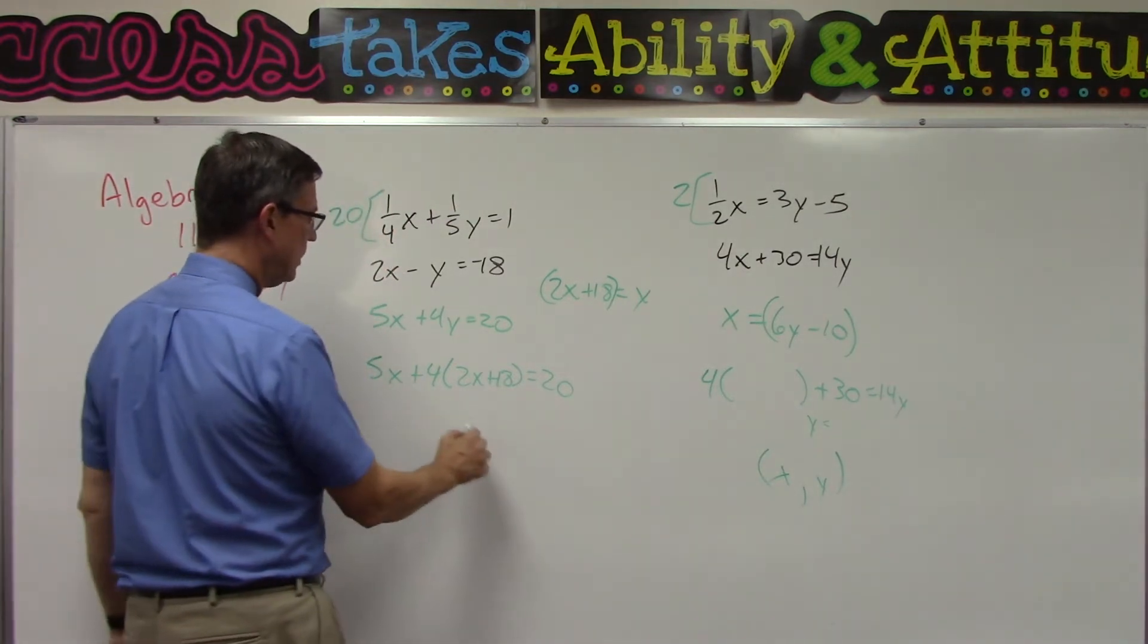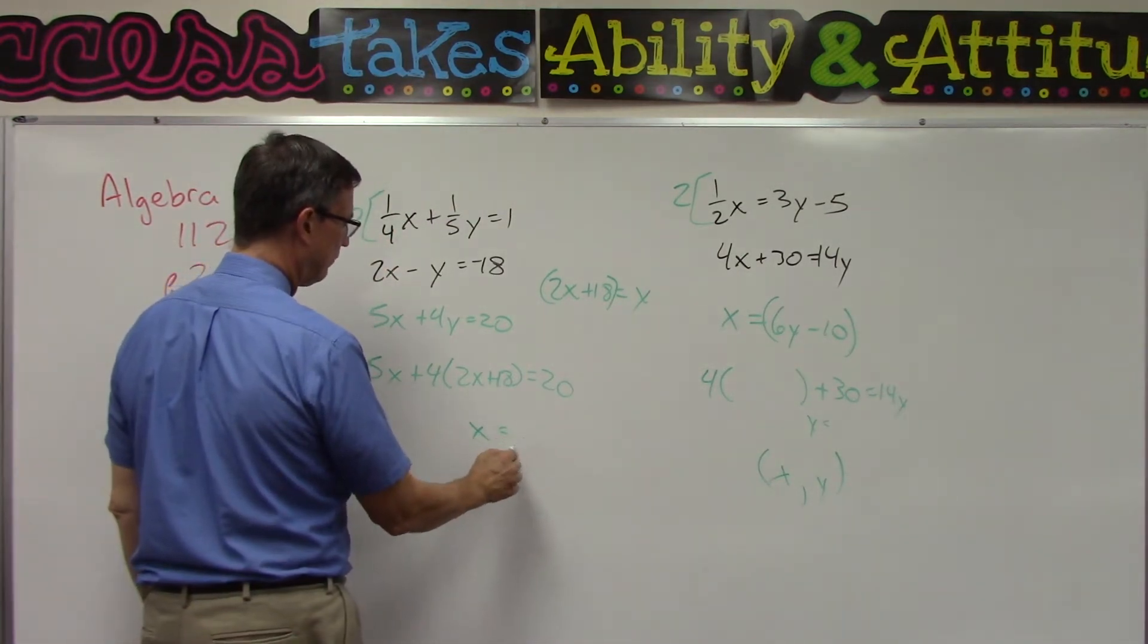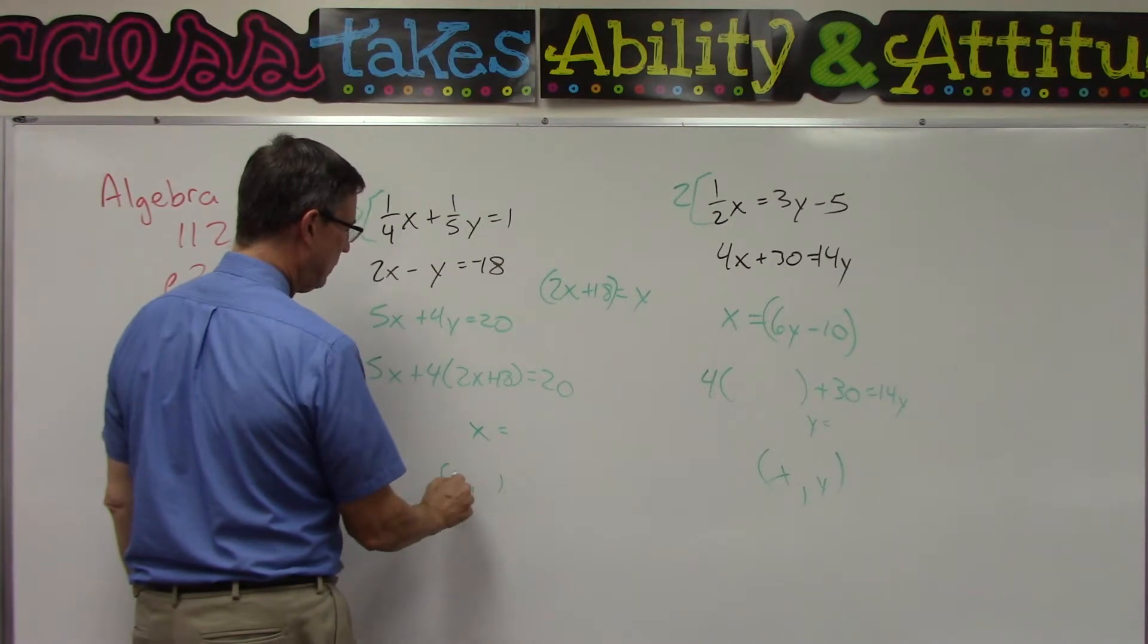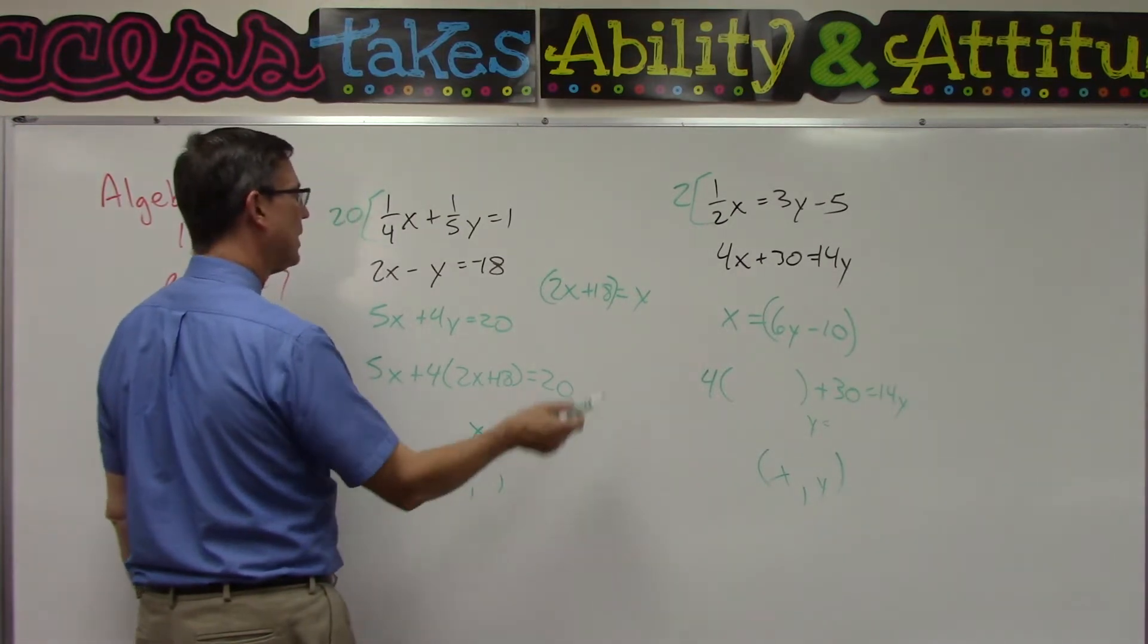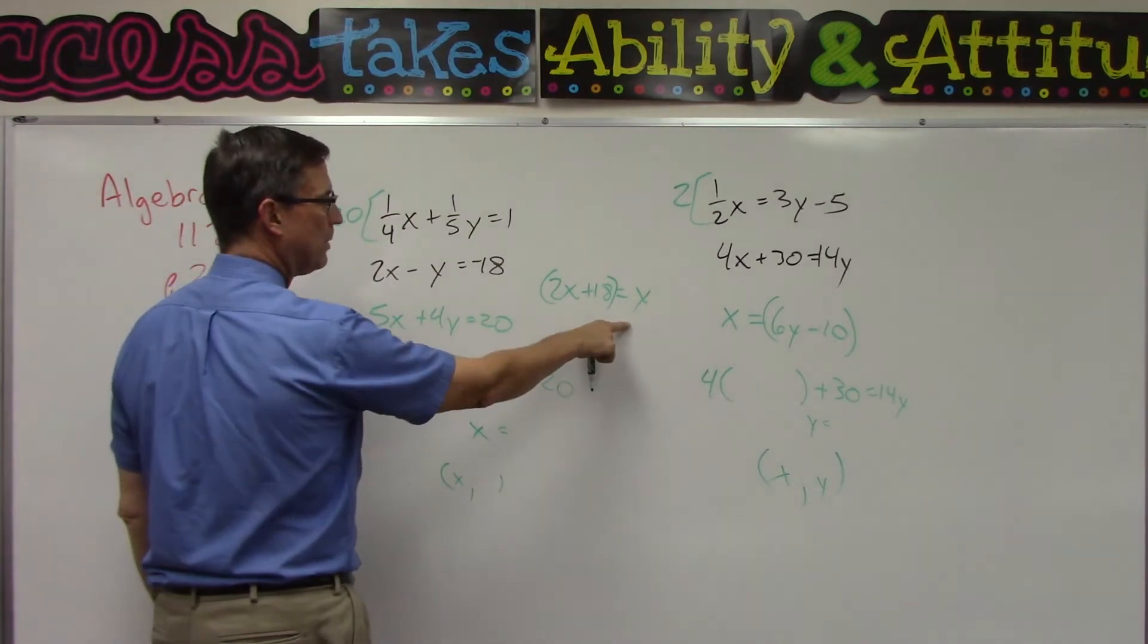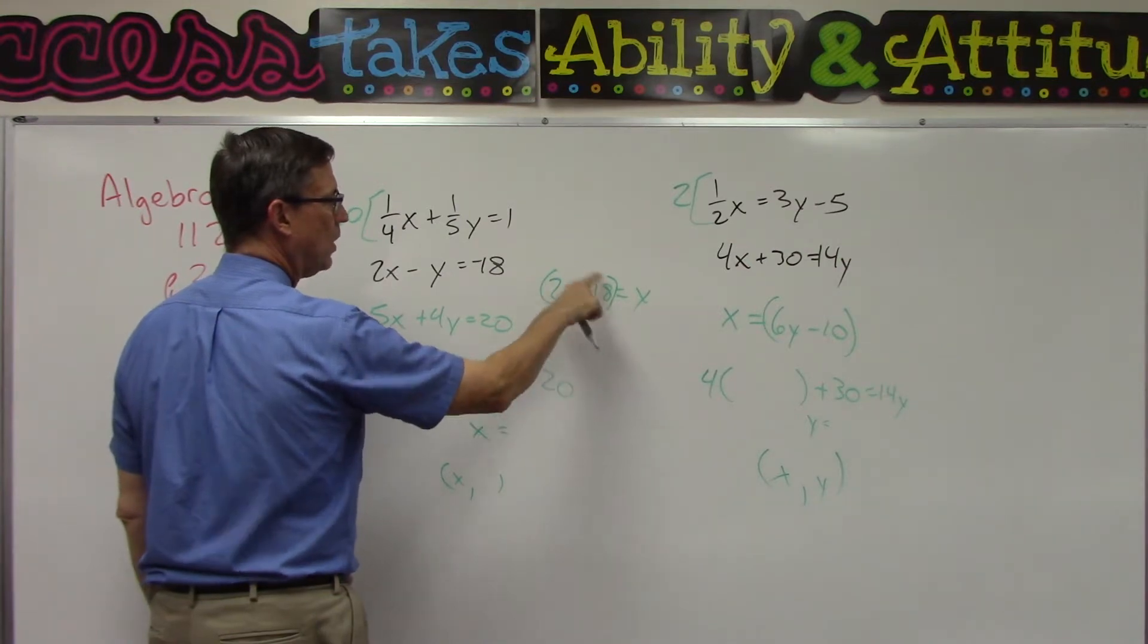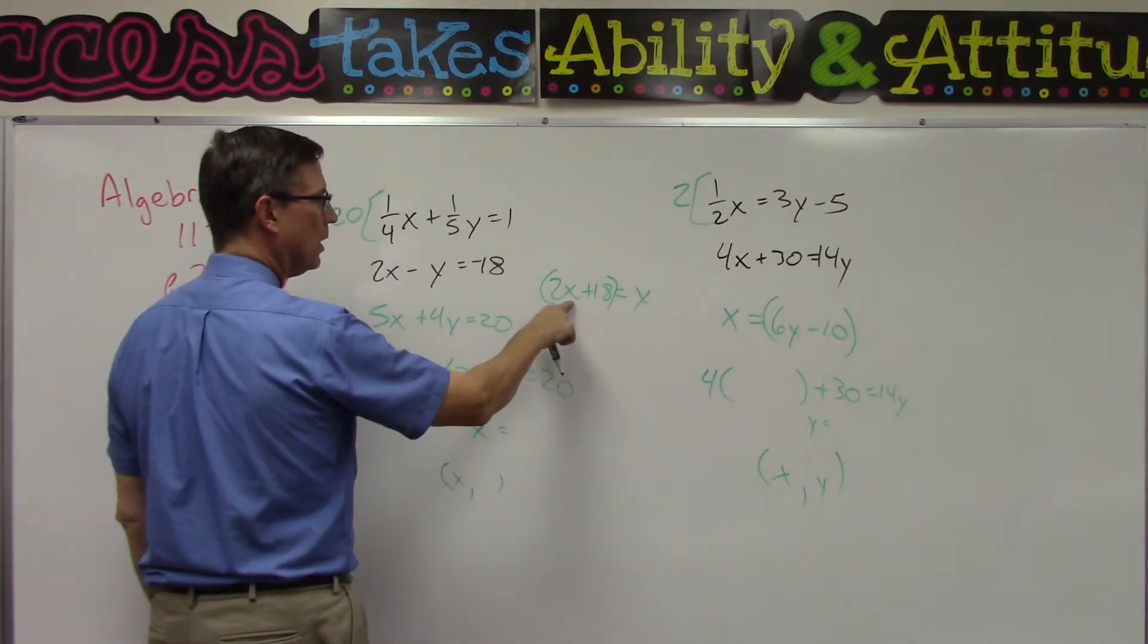So the answer to all of these—same here, this one here, you're going to solve for X first, so that will give you your X value. Take it back to, I take it back, right here. Y is this quantity. So whatever you get for X, plug it in for X: two times that number plus 18.